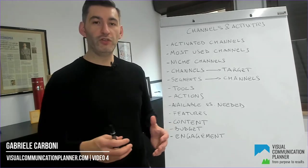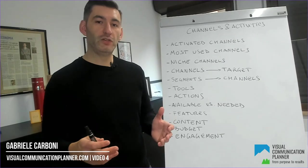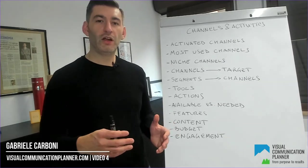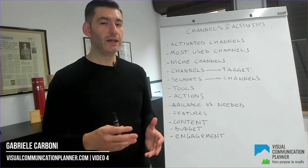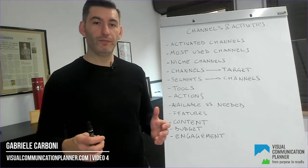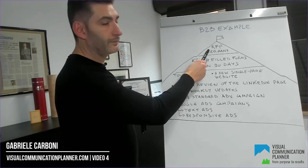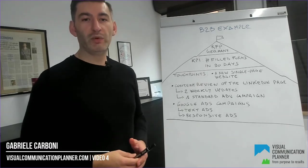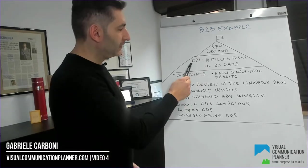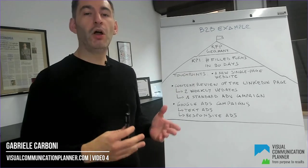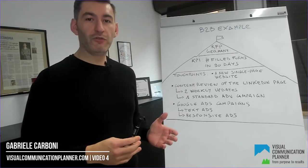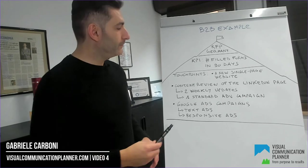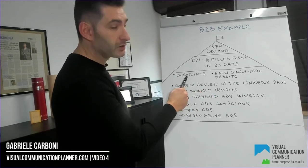Please go to the official website of the Visual Communication Planner to download the full slides. You may start seeing the strategy more clearly. Let's go back to our B2B example. Goal: request for proposal from manufacturing companies in Germany. KPI: the number of requests through the website from each web touchpoint in 90 days.